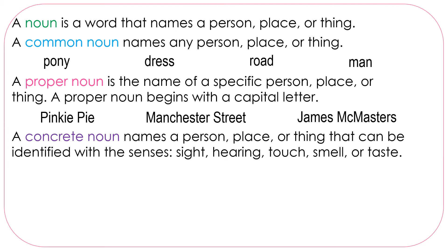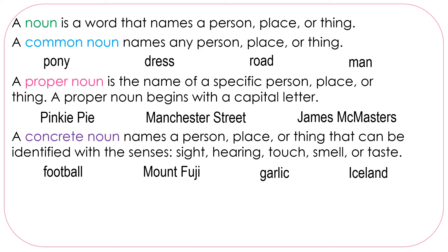A concrete noun names a person, place, or thing that can be identified with the senses — sight, hearing, touch, smell, or taste. Examples include: football, Mount Fuji, garlic, Iceland. You see that there are common and proper nouns that can also be concrete nouns.